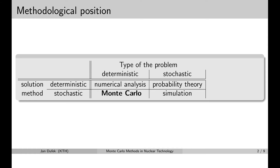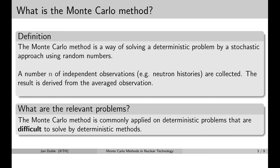Interestingly, we can apply stochastic methods on a deterministic problem — and such methods we call Monte Carlo methods. Interestingly, we get a solution with some uncertainty for a problem that doesn't have any uncertainty in its solution. We can also use a stochastic method to find the solution of a stochastic problem, in which case we say we obtain the solution by a simple simulation. So in simple words, the Monte Carlo method is a way of solving a deterministic problem by a stochastic approach, during which random numbers need to be generated.